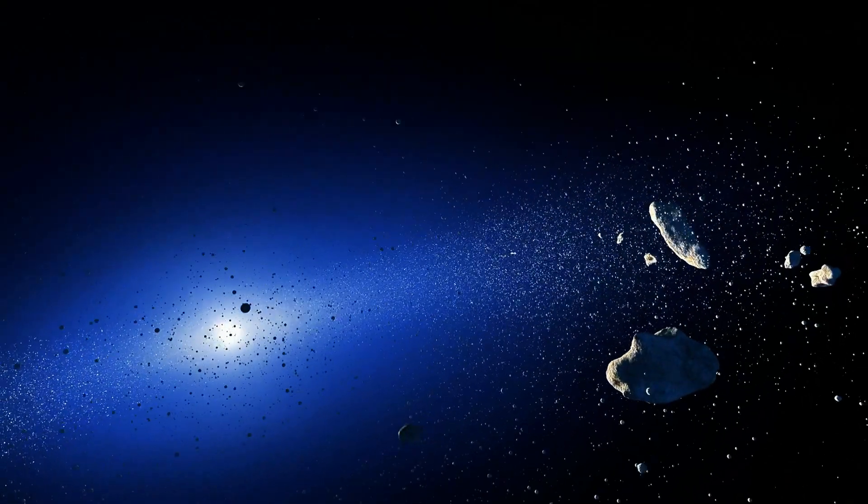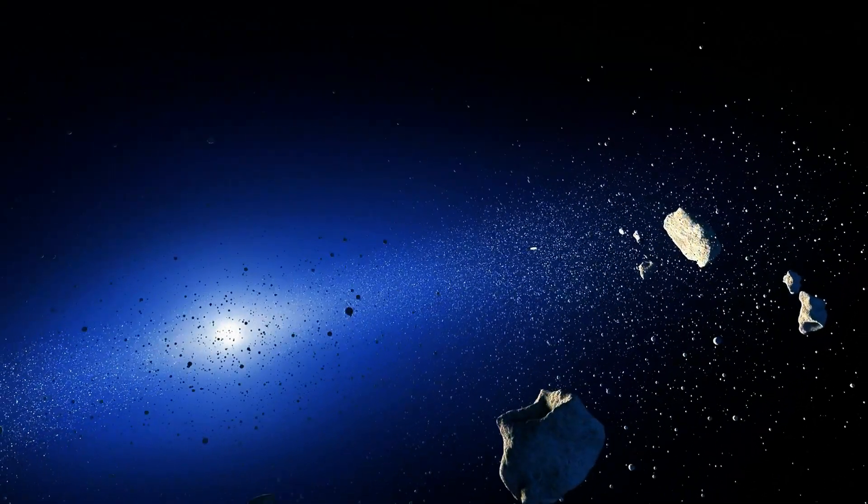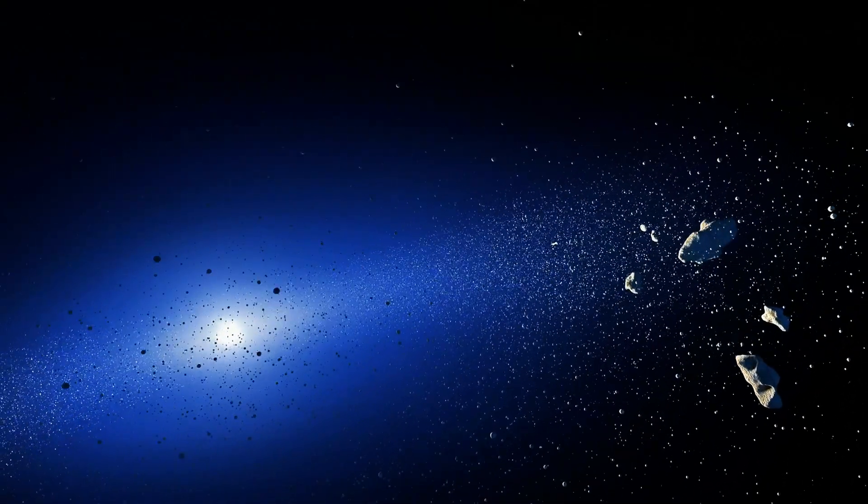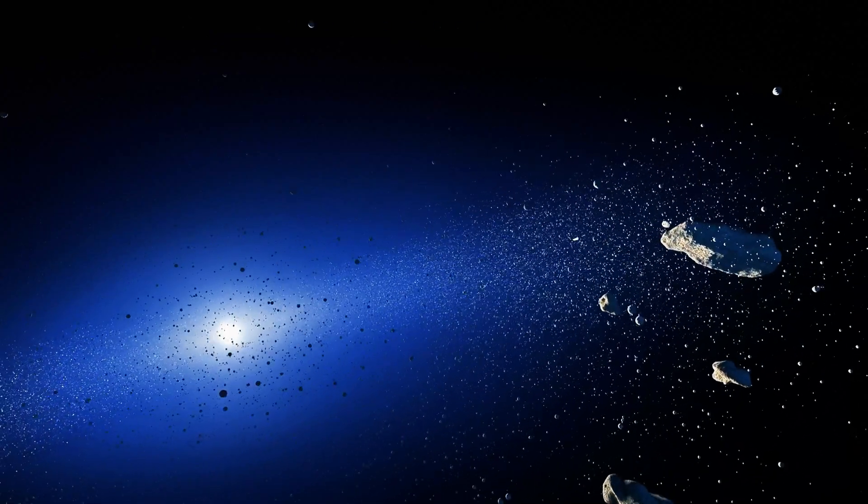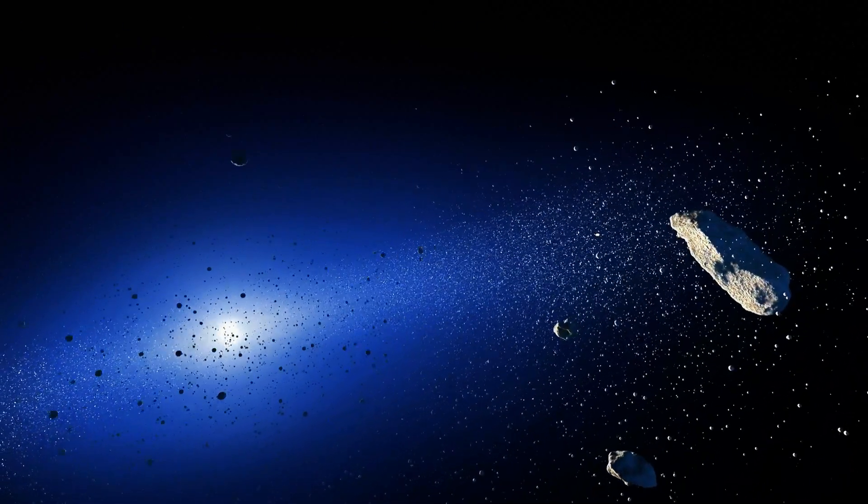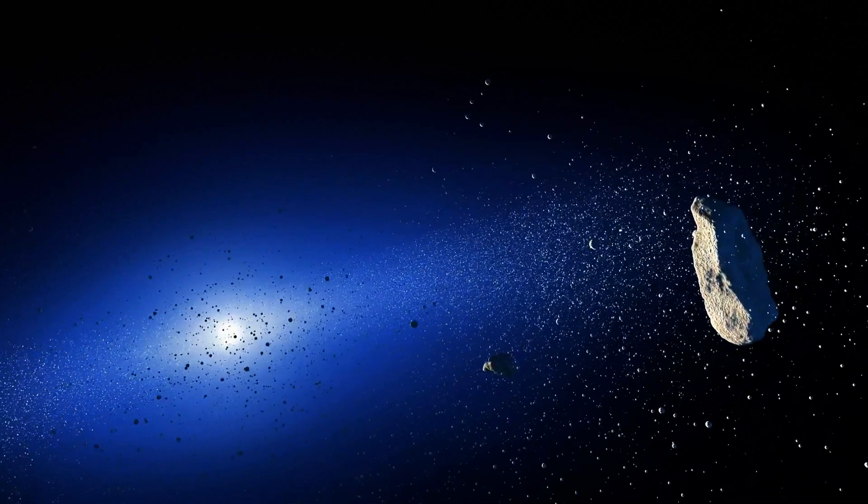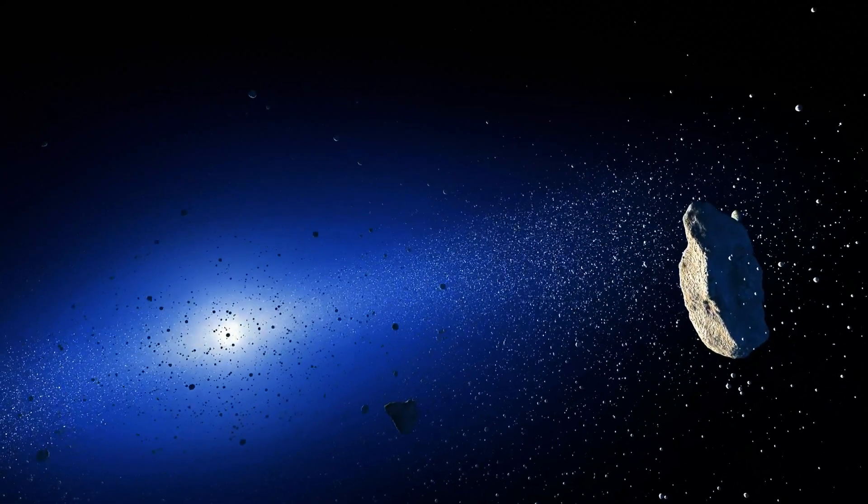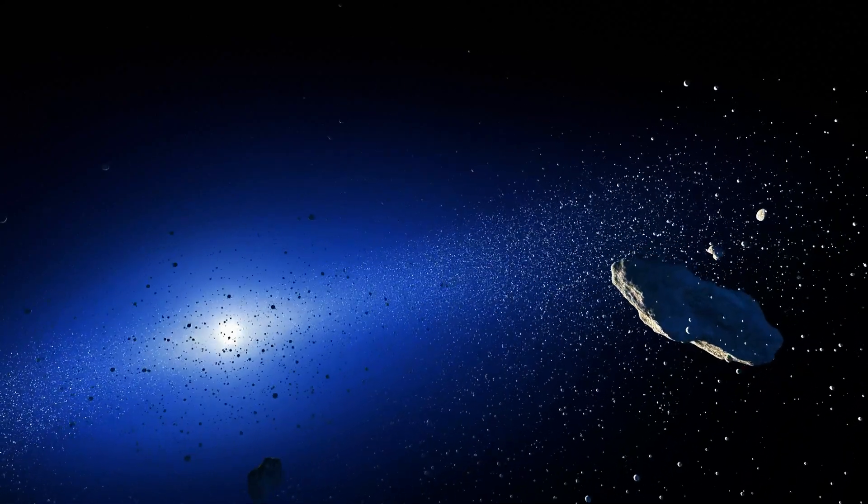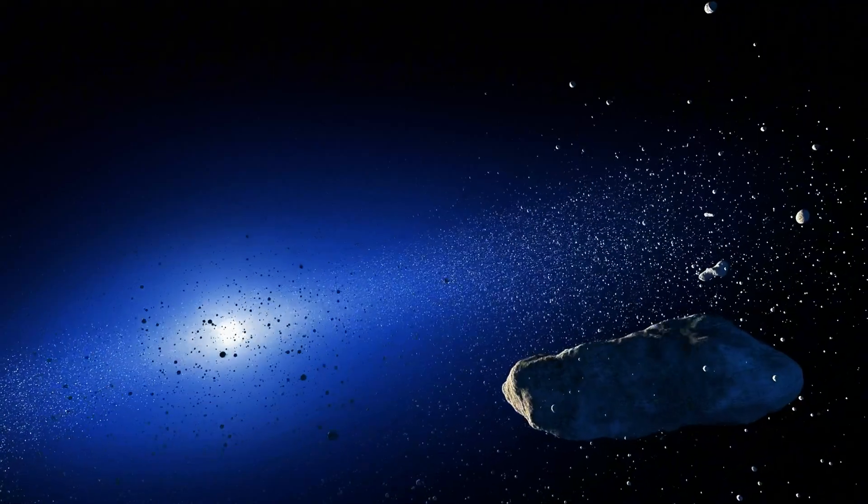Einstein needed Mercury to kill Newton. The planet's wobbly orbit, a quirk Newton's physics couldn't explain, became proof for relativity. A crack where light could bend. Mercury didn't just test Einstein. It made him.